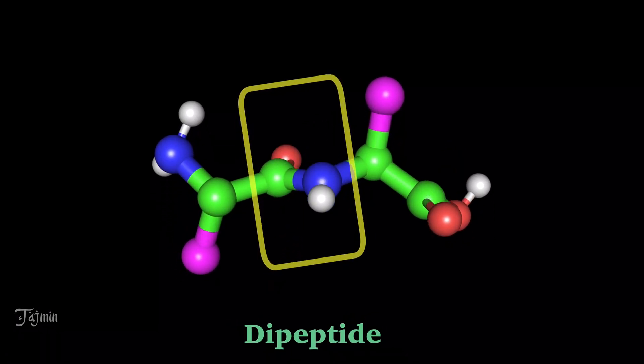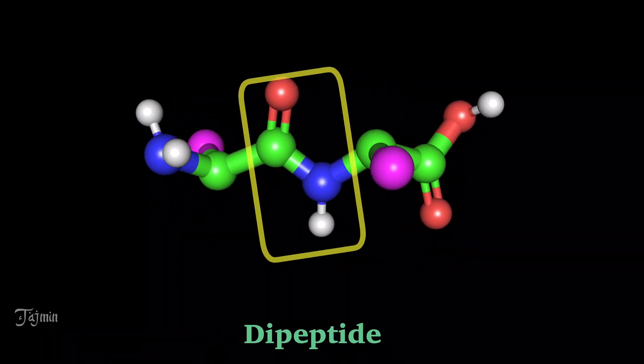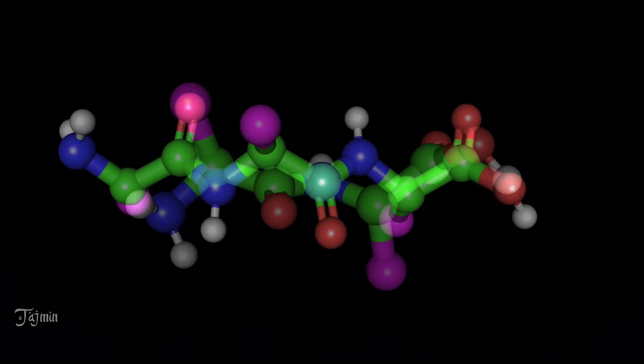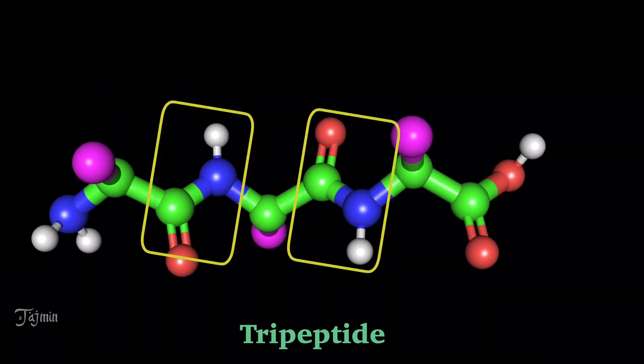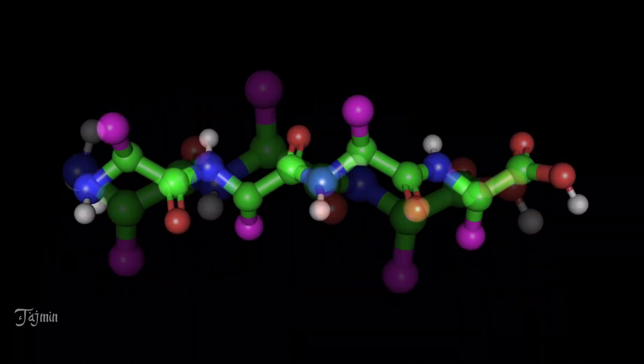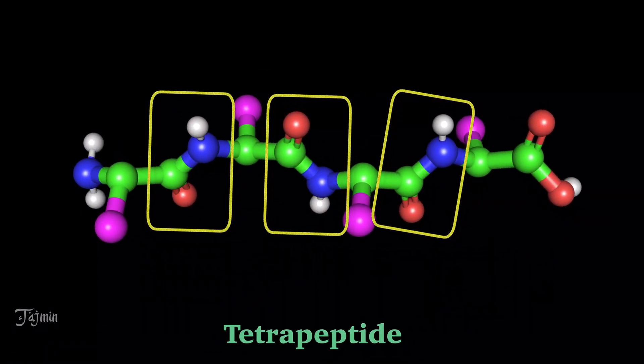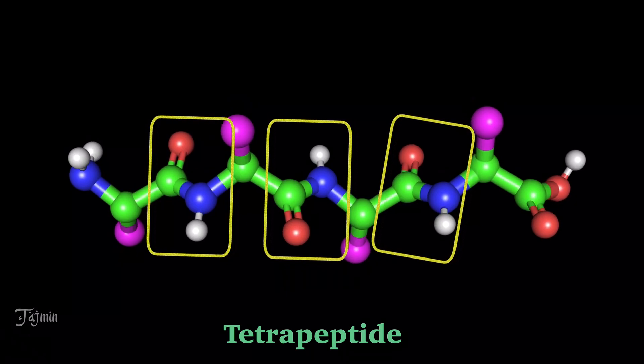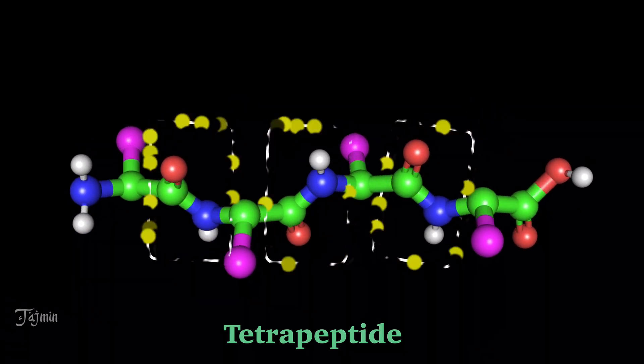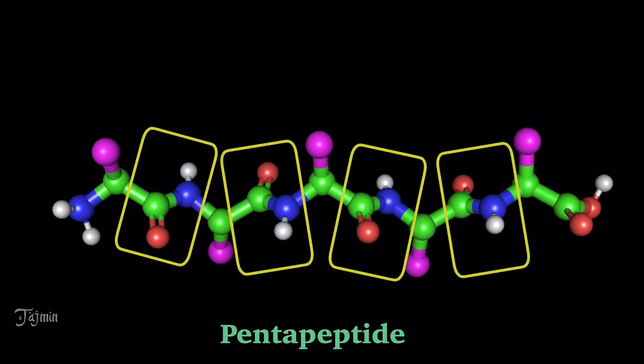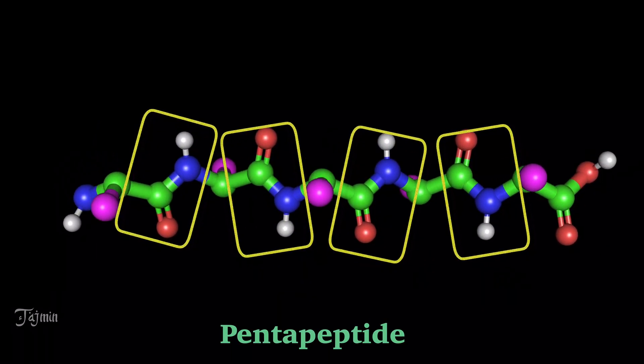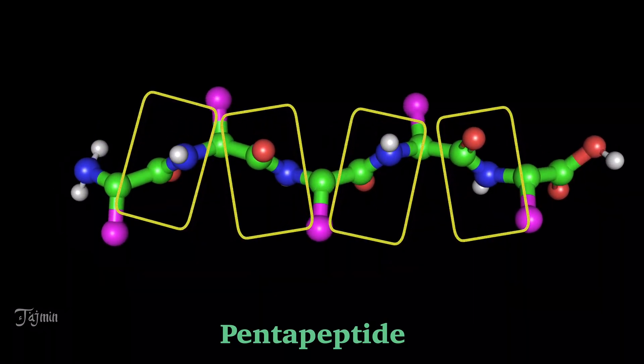A dipeptide is formed by two amino acids with a peptide bond. A tripeptide is formed by three amino acids with two peptide bonds. And a tetrapeptide is formed by four amino acids with three peptide bonds. Similarly, the number of peptide bonds is always one less than the number of amino acids in a polypeptide chain.